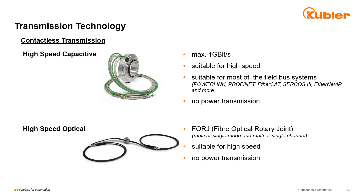Finally, I come to our contactless transmission technologies. Whereas in all previously mentioned variations transmission is via contacting elements, in these the transmission is completely contactless. As a result, both systems qualify for maximum speed and show no wear and tear at all. Firstly, we have our contactless capacitive transmission module designed for nearly all common fieldbus systems up to 1 Gigabit per second. Secondly, our fiber optical transmitter for multi- and single-mode transmission. Due to their non-contacting nature, both are of course not qualified for power transmission.